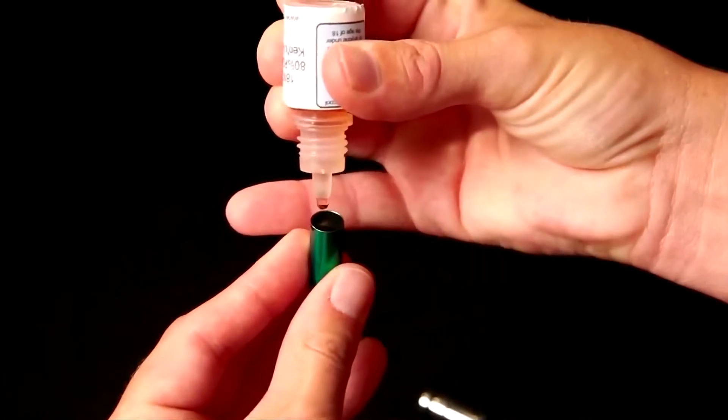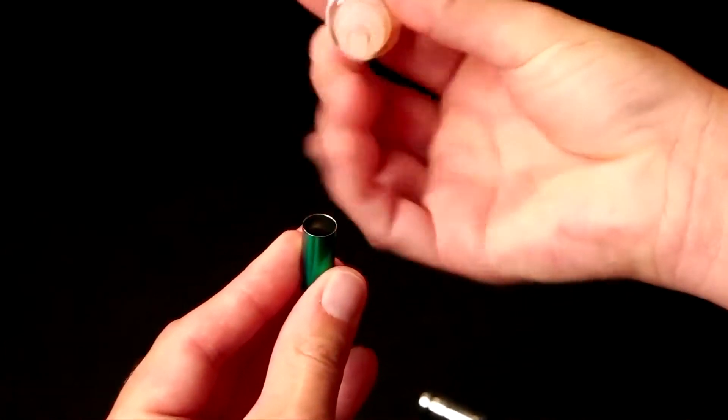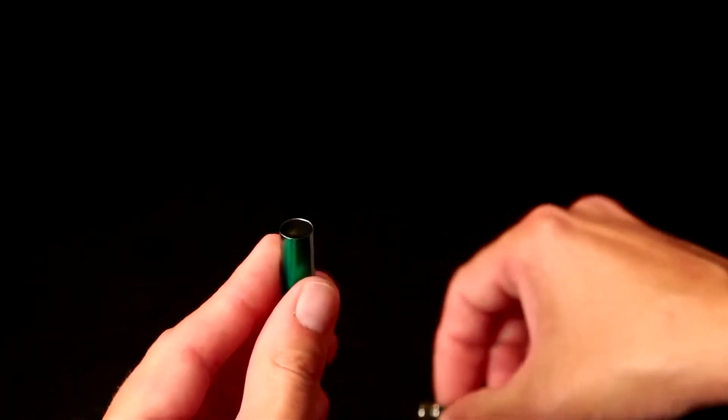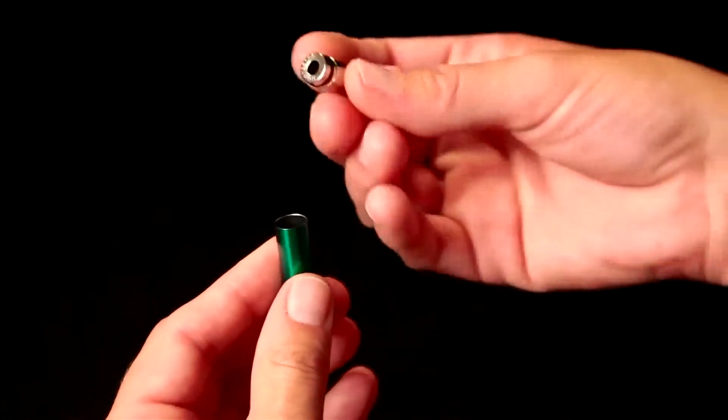To fill an atomizer using the direct drip method, you can drip directly into the center of the atomizer. Liquid can also be dripped directly into a drip tip.